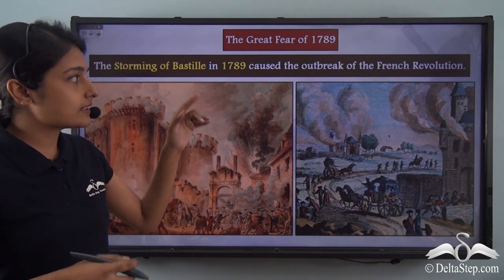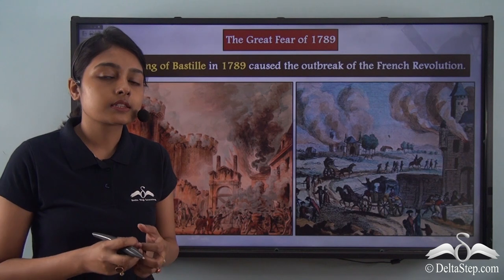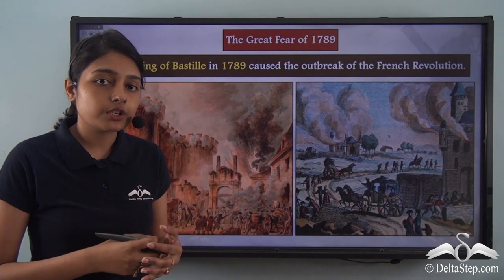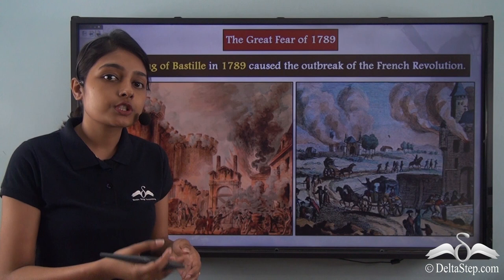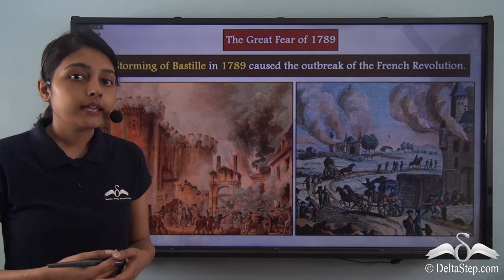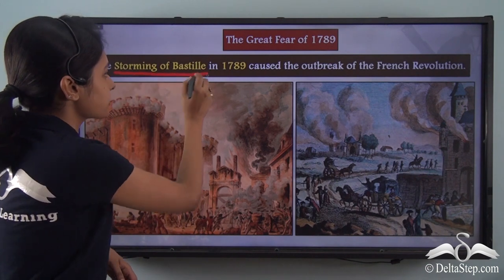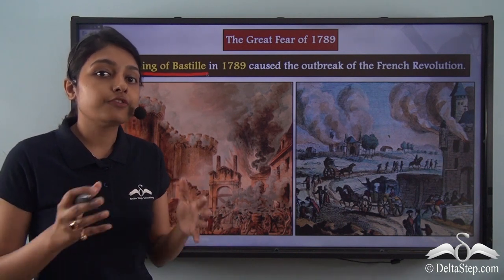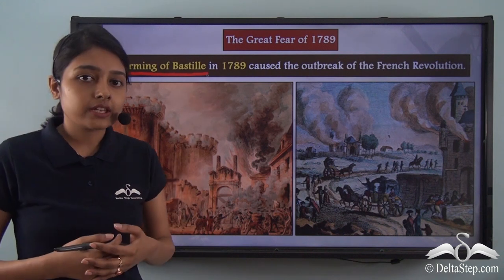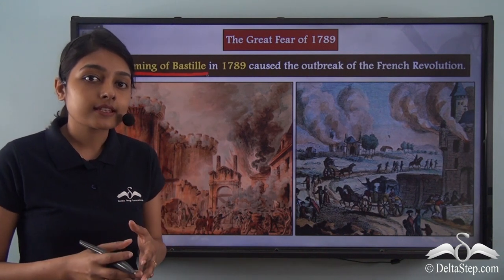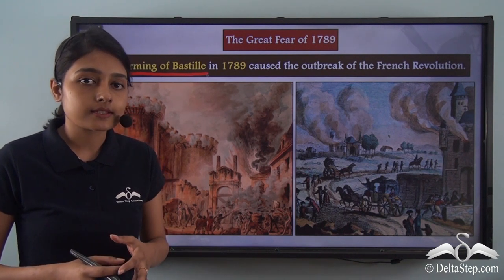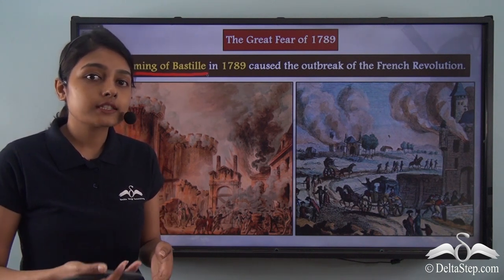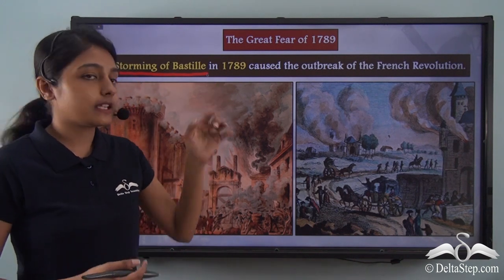The storming of Bastille in 1789 officially marked the outbreak of the French Revolution. Prior to this, only revolutionaries were trying to counter the French monarchical rule. But it is with the storming of Bastille that the French Revolution took both a formal and a violent shape. This one event triggered further protests and rebellion among the revolutionary masses.